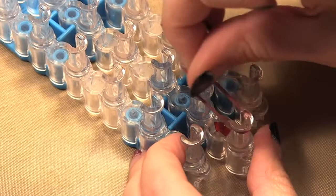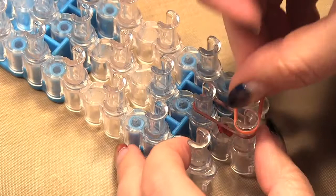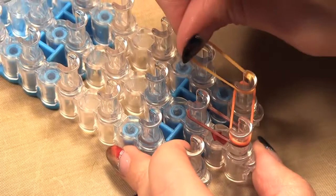So we start with our loom with the arrow pointing up and we're going to take our first elastic in the center peg and go straight up. Then we're going to take a second one and go to the side.